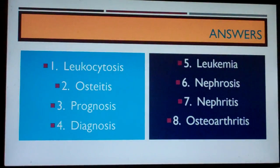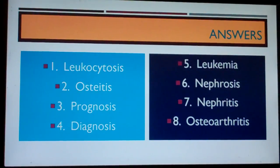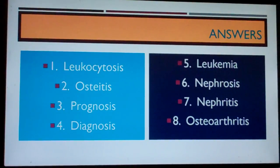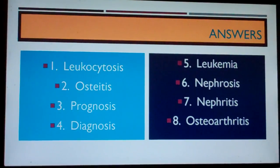Answers: Number one — Leukocytosis. Number two — Osteitis. Number three — Prognosis. Number four — Diagnosis. Number five — Leukemia. Number six — Nephrosis. Number seven — Nephritis. Number eight — Osteoarthritis.